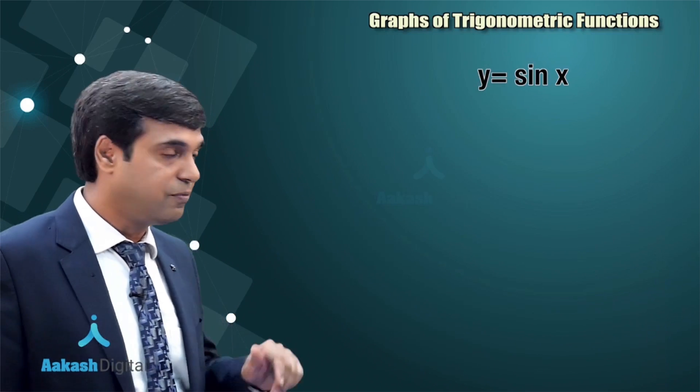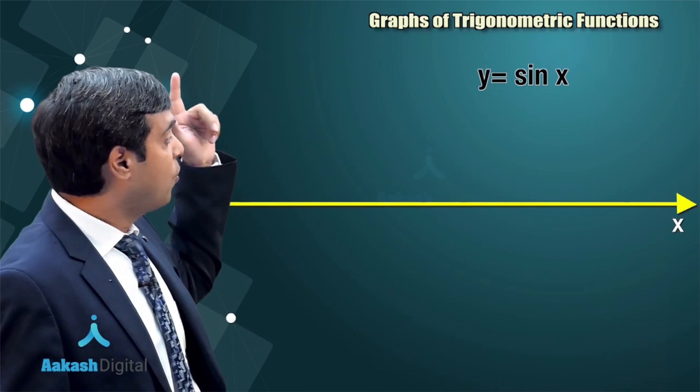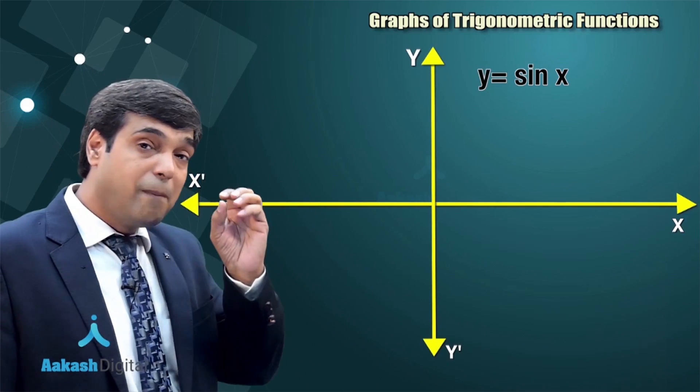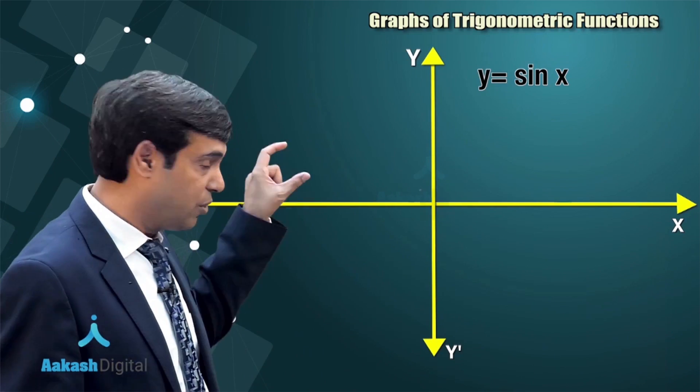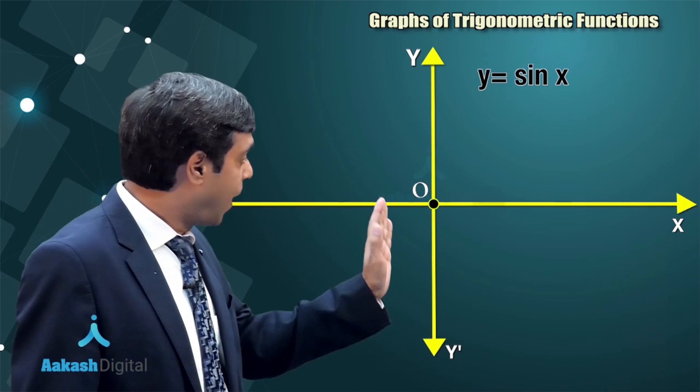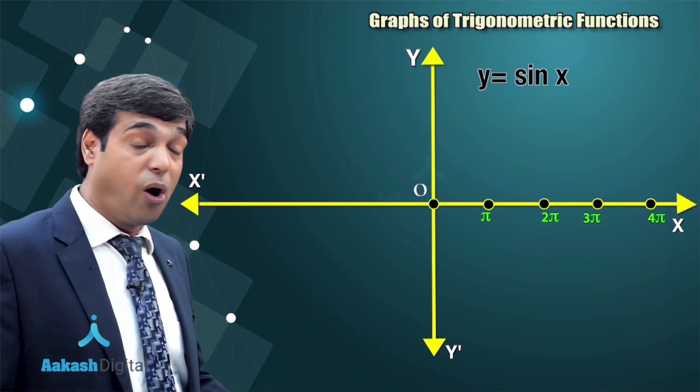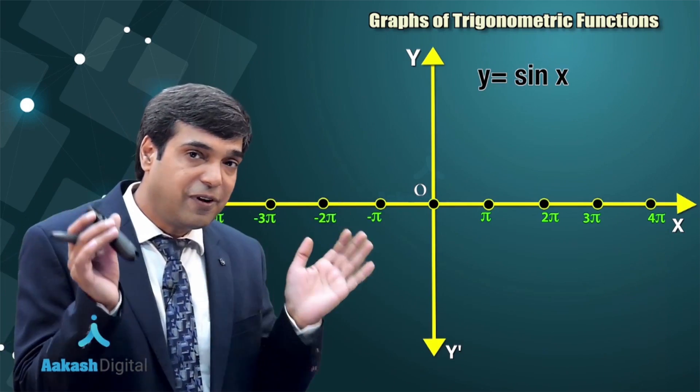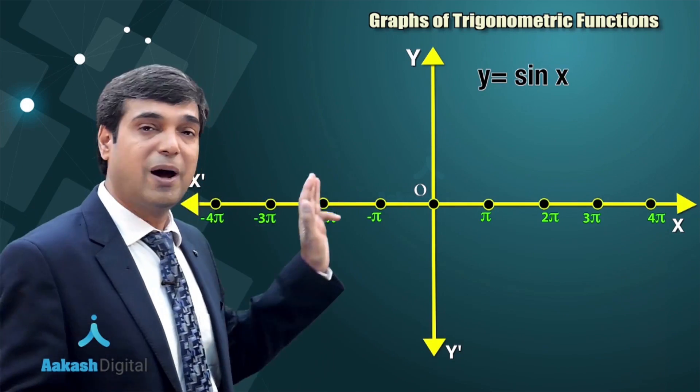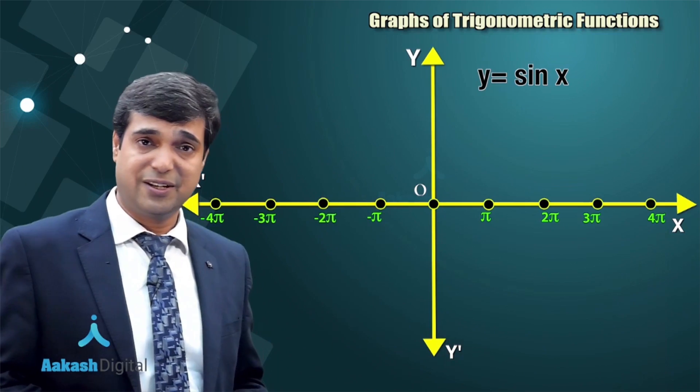Let's draw the coordinate axis first: x-axis, y-axis. Mark important points like the origin, then pi/2, pi, 3pi/2, 4pi on the x-axis. Now let's further subdivide - just mark the points, not necessary to mention always.